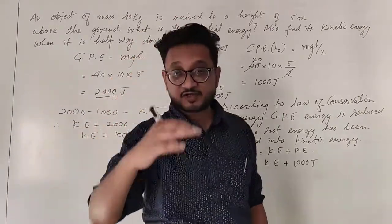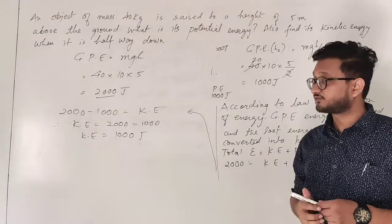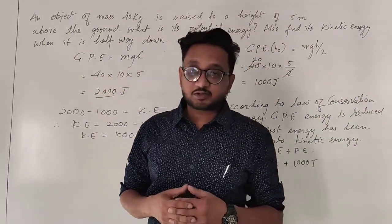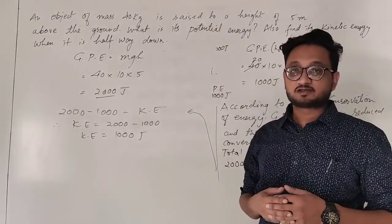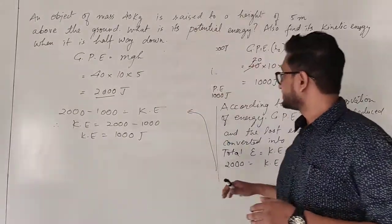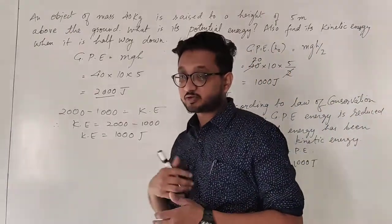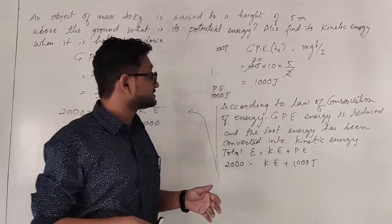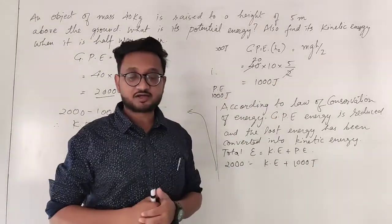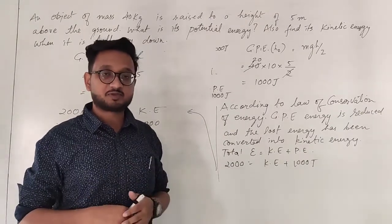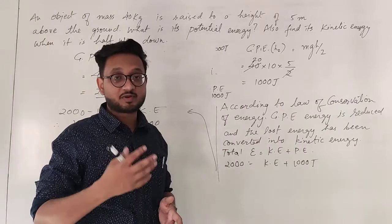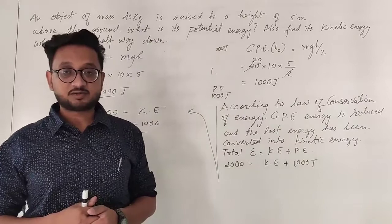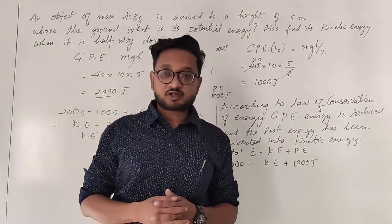So at the halfway point, the kinetic energy of this object will be 1000 joules. Always remember that total energy equals kinetic plus potential energy, and then you can find the remaining energy. It is not always that it will be half — sometimes it might be three-fourths of the way, or a different height might be given, and you will have to calculate the rest of the energy using the actual height.